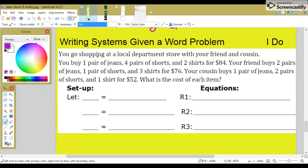You go shopping at a local department store with your friend and cousin. You buy one pair of jeans, four pairs of shorts, and two shirts for $84. Your friend buys two pairs of jeans, one pair of shorts, and three shirts for $76. Your cousin buys one pair of jeans, two pairs of shorts, and one shirt for $52. What is the cost of each item?